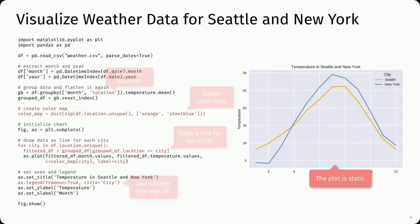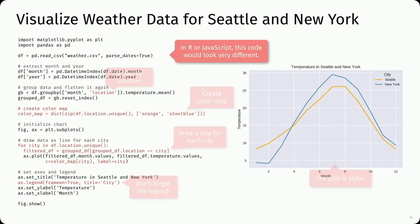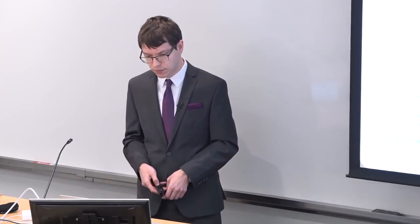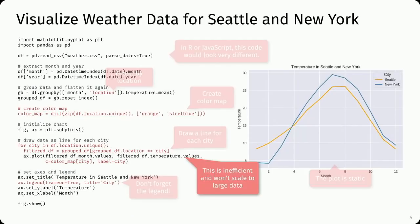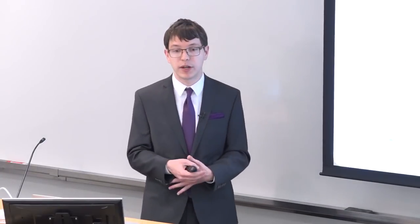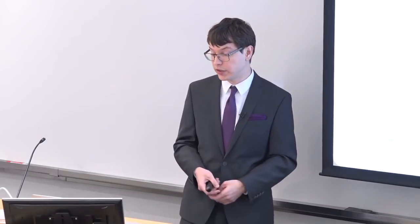Even though we went through all this effort, the plot we made in the end is a static plot. If you wanted to make this chart interactive, we would probably have to rewrite it in something like JavaScript. This was Python code; in R, this would look very different. The issue is that you would essentially have to rewrite it because the specification is bound to the low-level specification of how this language works. It's also hard to optimize this code because we're interleaving the specification and the execution. If you wanted to run the same visualization for all cities in the world, this probably wouldn't scale.